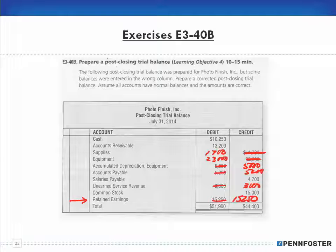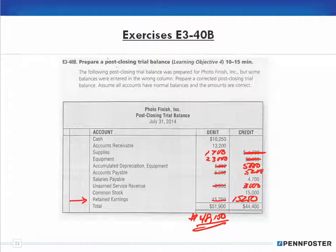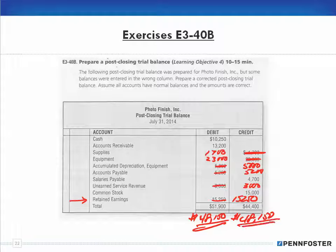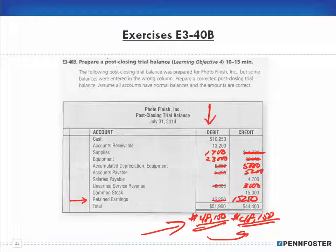We need to foot both columns. For debits: 10,250 plus 13,200 plus 1,700 plus 23,000 gives a footing of 48,150. Then we add up the credits: 5,000 plus 5,200 plus 4,700 plus 3,000 plus 15,000 plus 15,250 should also give us 48,150. Notice I added up the debits first and came up with that number — I did not just automatically make that the footing for credits. That's wrong. You have to do the math for the credit column and come up with the same number.